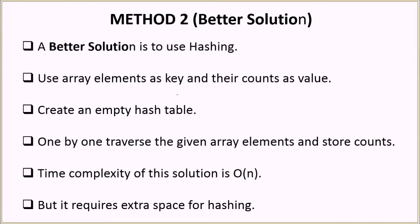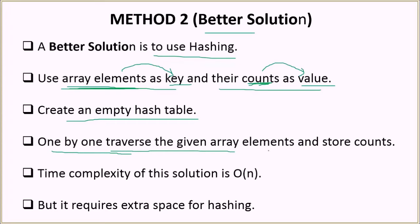Now we can have a better solution. The better solution is to use hashing. In this, you will basically have the array elements as keys and their counts as value. So as you know, in hashing, you have key value pairs. So the array elements will act as the key and their counts will be acting as the value. So we will basically be creating an empty hash table, and then you will start iterating over the array one by one. So you traverse the given array.